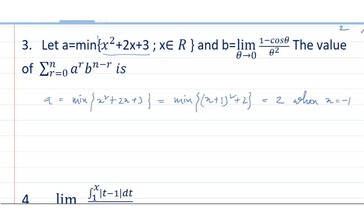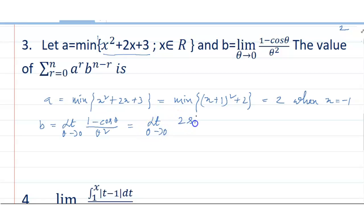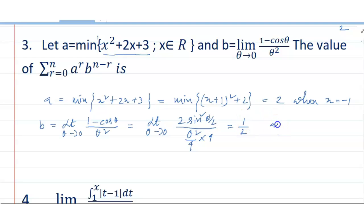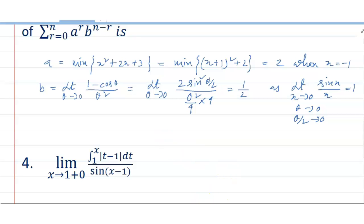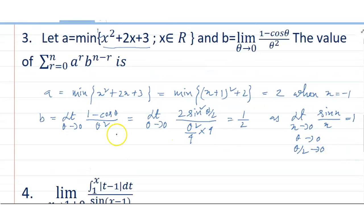My second question: b equals limit theta tends to 0 of (1 minus cos theta) divided by theta squared. This equals limit theta tends to 0 of 2 sine squared (theta by 2) divided by theta squared, which equals theta squared by 4 into 4. Using the standard limit sin x by x equals 1 as theta tends to 0, so theta by 2 tends to 0. My answer is one half.